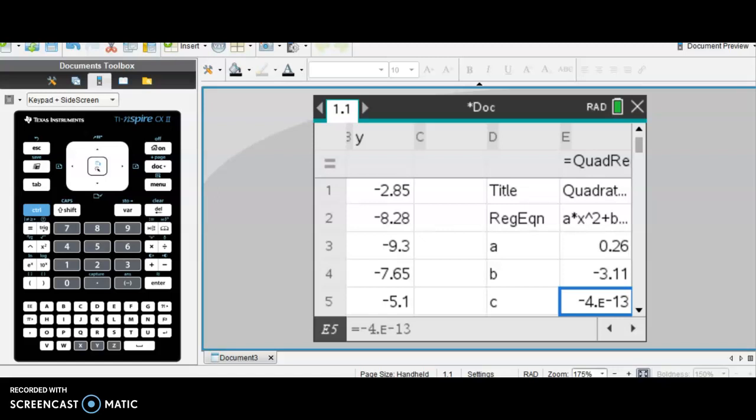which really means 0.000000000000004. So it's really close to 0. So we are going to round it to 0. So if you ever see that E, that means it's in scientific notation and is really close to 0.